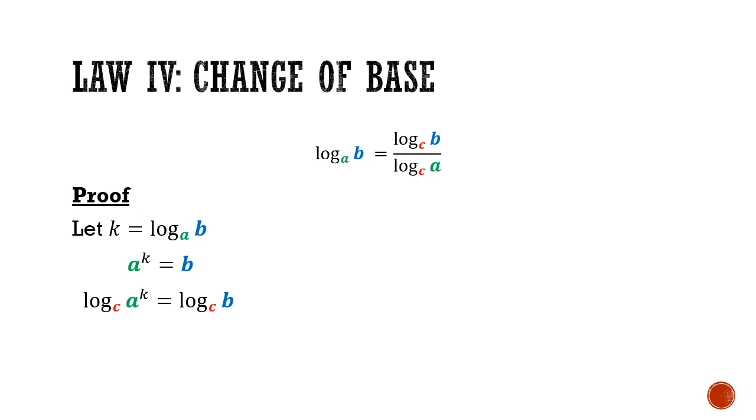And you can see that I can apply law number 3 and take out the k. Since I have a to the power of k, this will become k times log base c of a, which is still equals to log base c of b. And I can bring the log base c of a to the right-hand side as the denominator. So lastly, I just replaced k with log base a of b. And I have proved the fourth law.